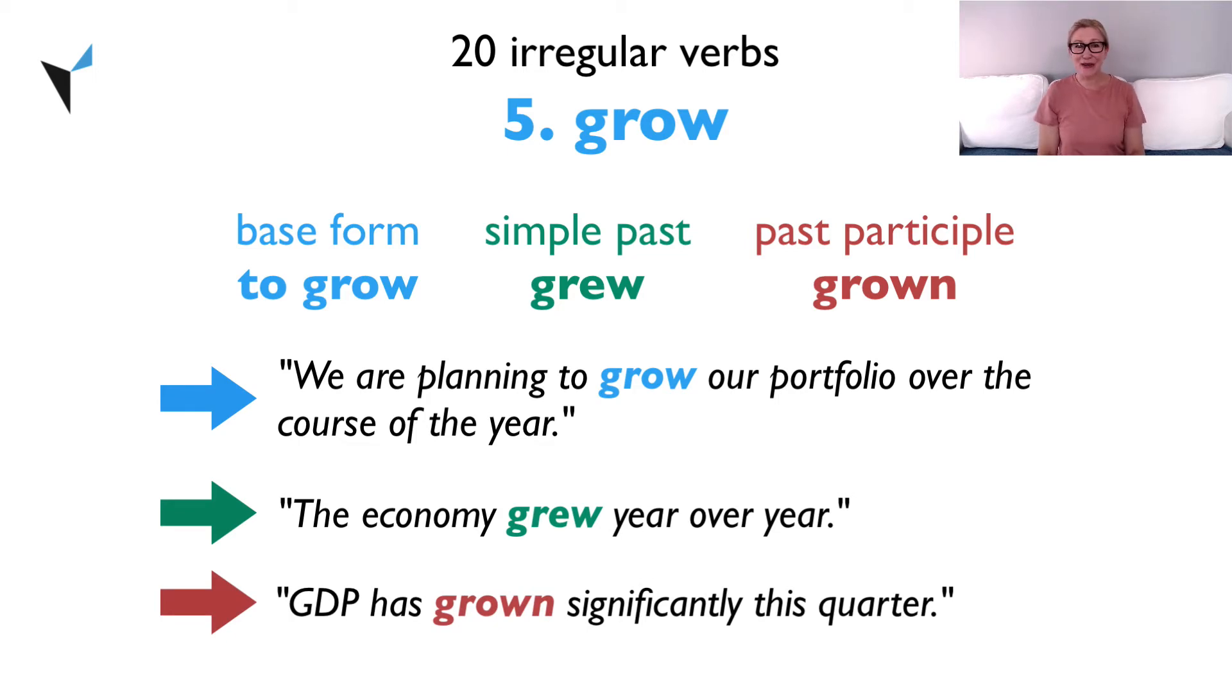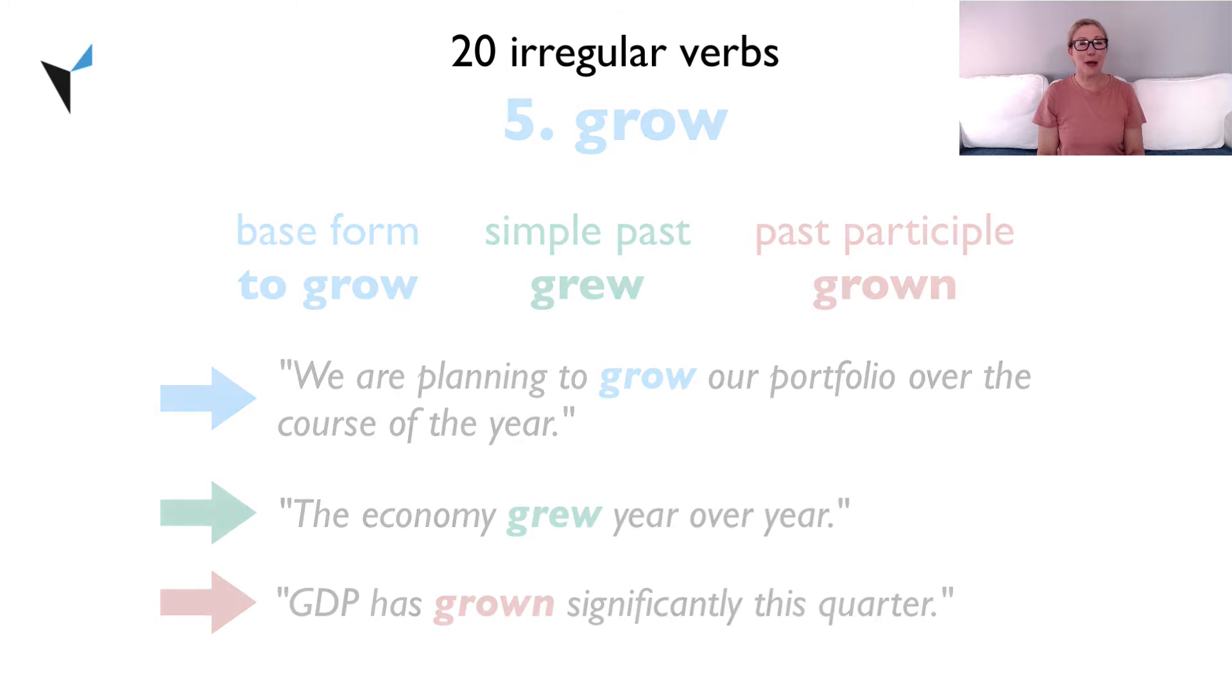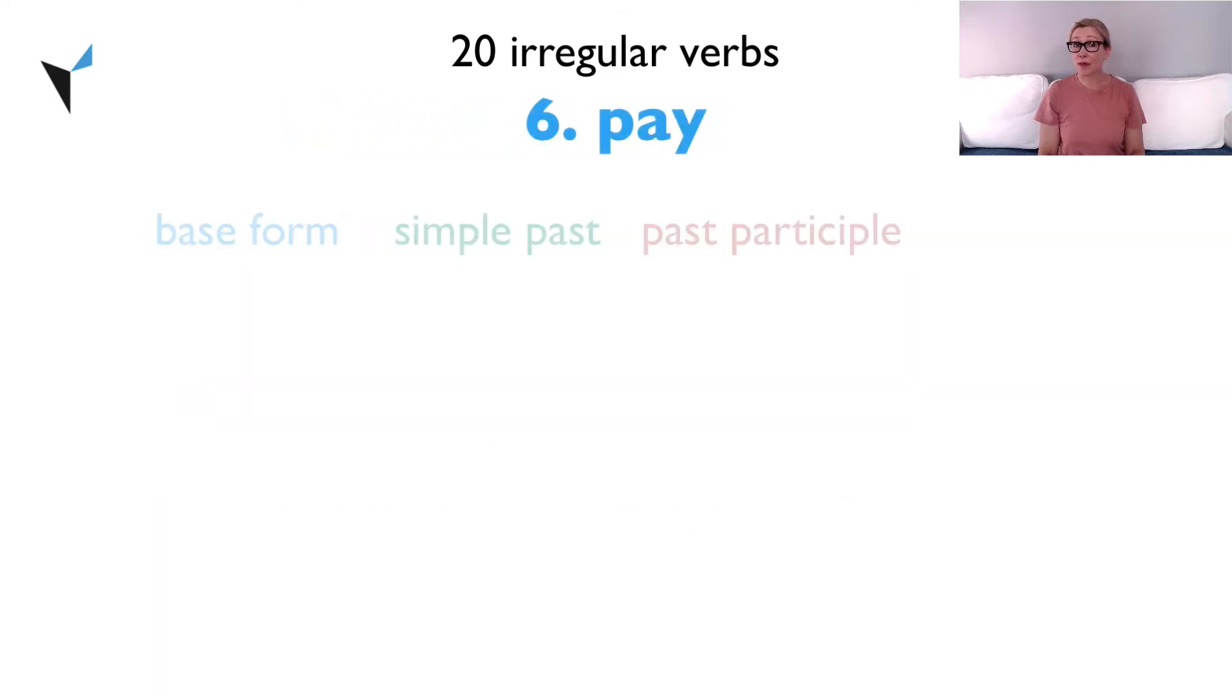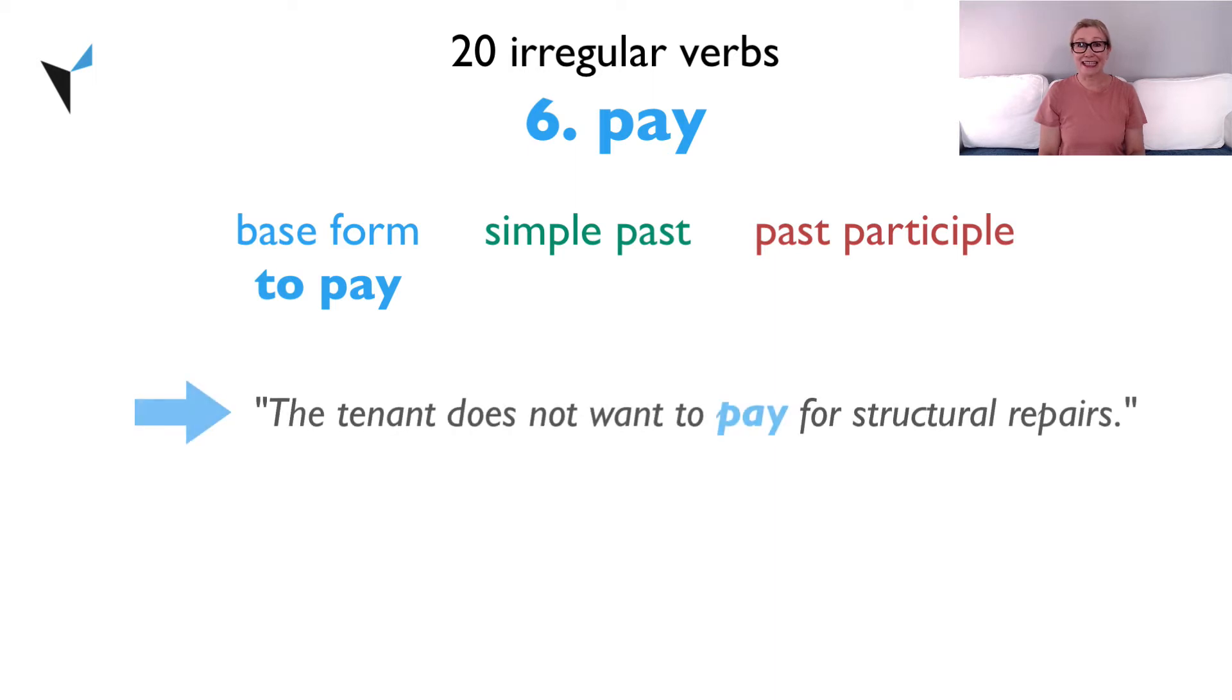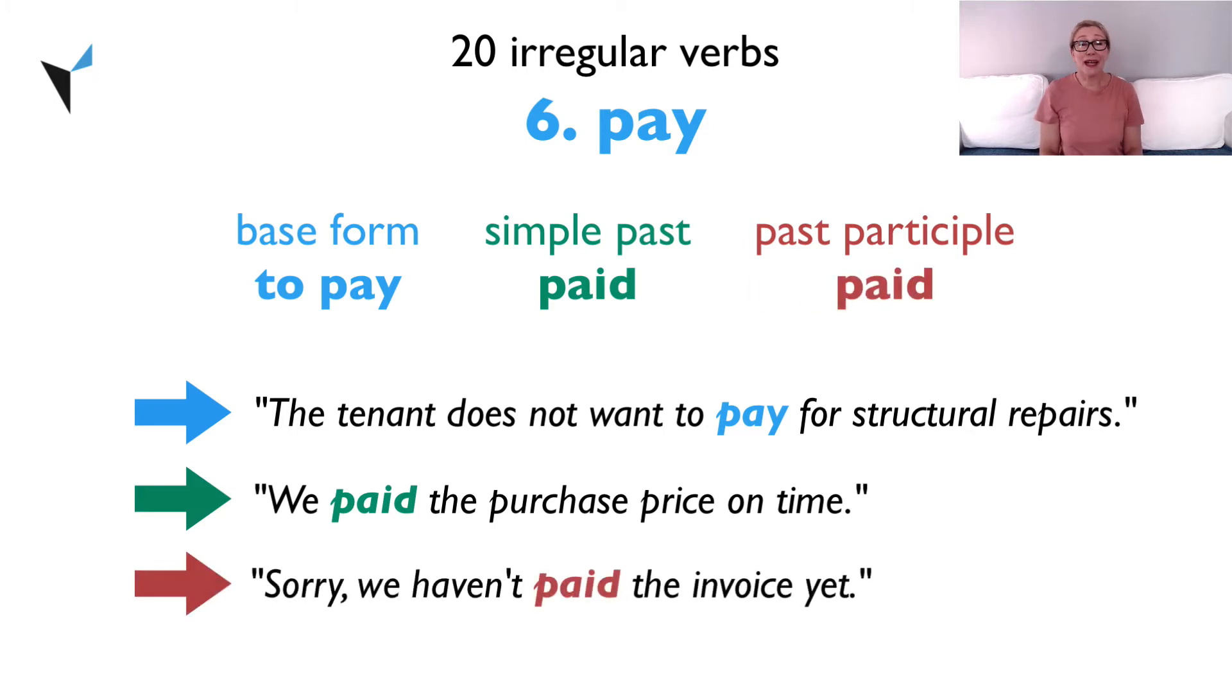Which brings us to verb six, pay. The base form is to pay. The tenant does not want to pay for structural repairs. The simple past is paid. We paid the purchase price on time. The past participle is also paid. Sorry, we haven't paid the invoice yet.